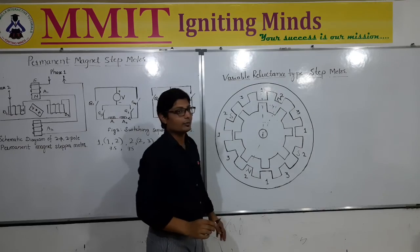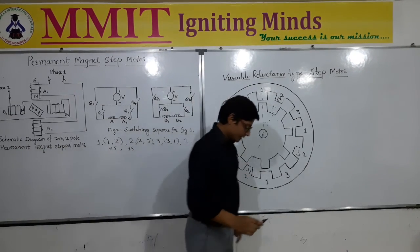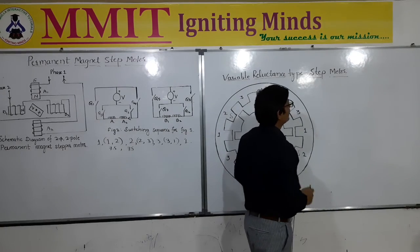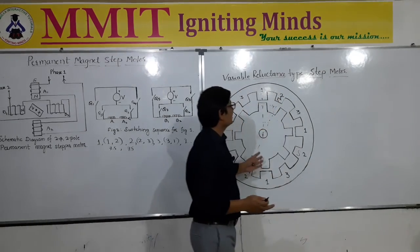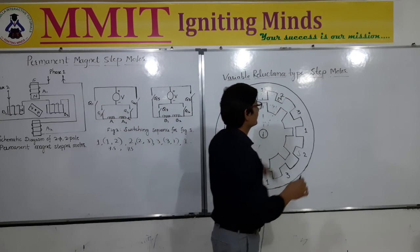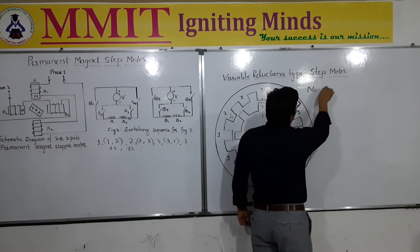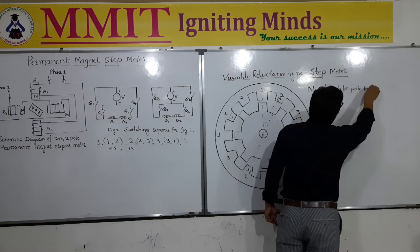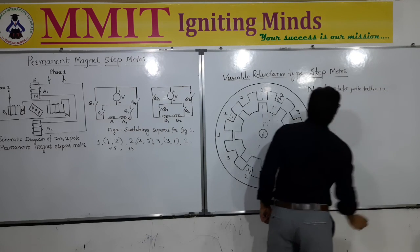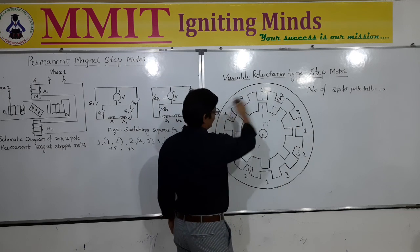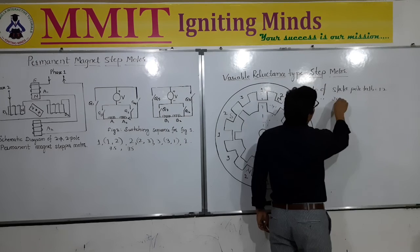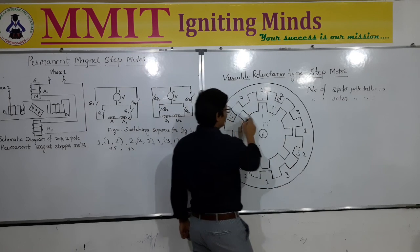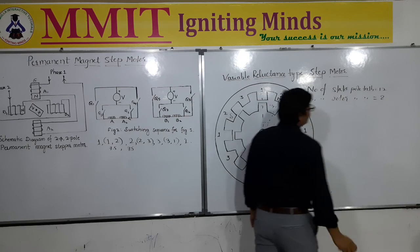The full step angle can be obtained using a simple formula. We need the total number of stator pole teeth and rotor pole teeth. Counting from the diagram: stator pole teeth = 4 sets of 3 = 12; rotor pole teeth = 8. The pole pitch of the stator (θ_s) = 360° ÷ 12 = 30°. Similarly, the pole pitch of the rotor (θ_r) = 360° ÷ 8 = 45°.